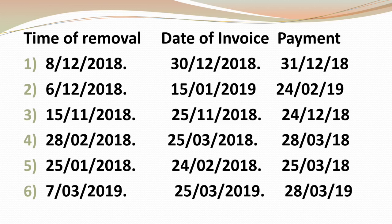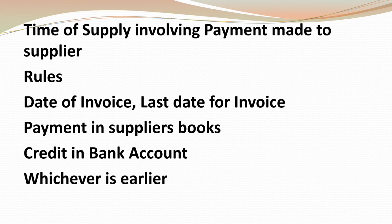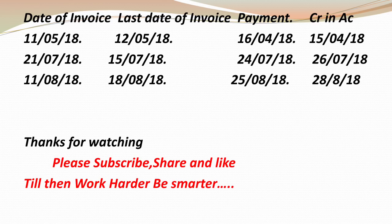For Case 6, dates are 7th March 2019, 25th March 2019, and 28th March 2019 — the earliest is 7th March 2019, so that is the Time of Supply. Next, we look at the second case: Time of Supply involving payment made to the supplier. The rules here are: Date of Invoice, last date for invoice, payment in the supplier's books, and credit in the bank account — whichever is earlier. So you take all four dates and pick the earliest.